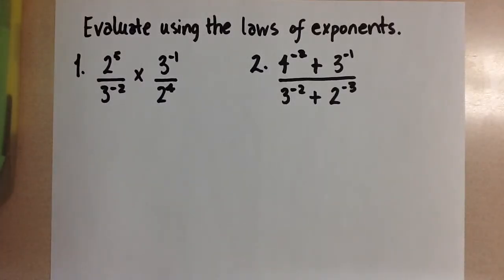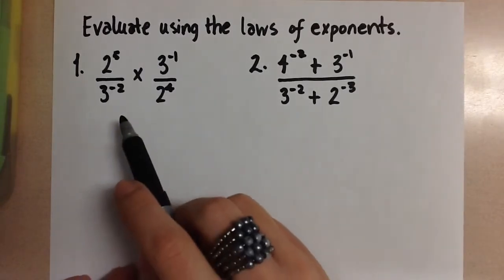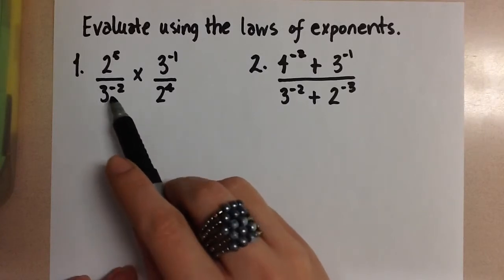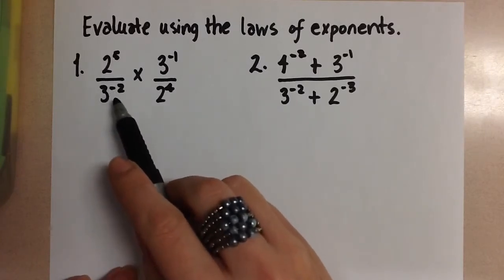We're going to evaluate these two expressions which contain integer exponents. So let's look at the first one here. The first thing I want to do is to get rid of the negative exponents and turn them into positive exponents.